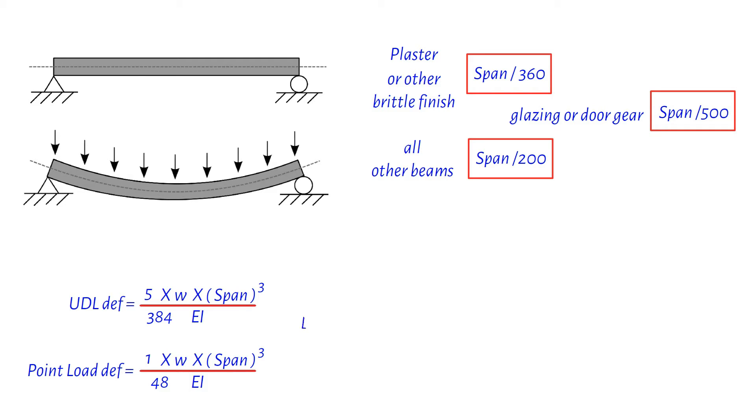Oh, and by the way, those constants I mentioned. For steel sections, the modulus of elasticity E is 205,000 newtons per square millimeter, and I is the second moment of area, which you can find in section tables.